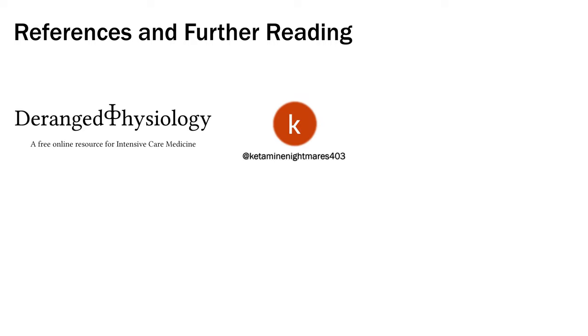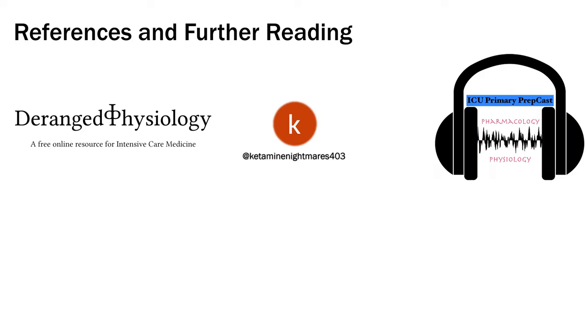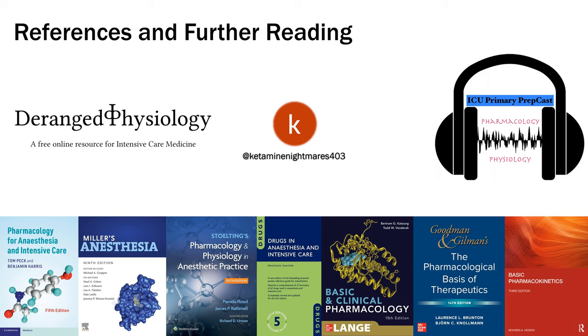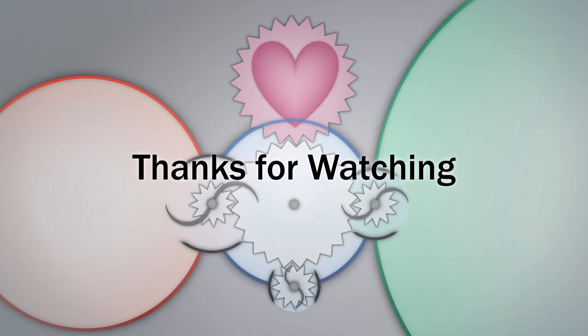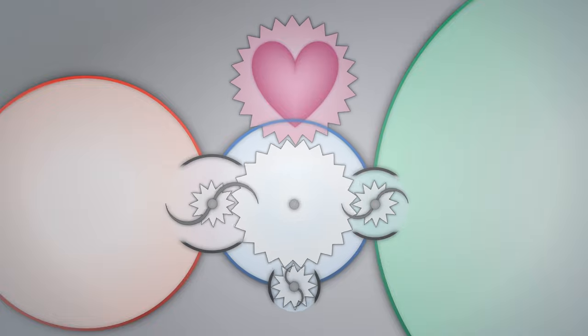That's it. If you want more information, check out some of my sources. Deranged Physiology is a standing recommendation. I'd also mention the anaesthetic YouTube channel Ketamine Nightmares, which has a whole series on pharmacokinetics. There's a podcast called ICU Primary Prepcast specifically for the Australian CICM primary exam — that's where I got the excellent point about maximum clearance rates of different organs. This was an anaesthetic-heavy video, so I used a lot of the same references as the neuromuscular junction video — Peck and Harris is probably the highest yield. If you want a book that properly dives into the mathematical stuff, check out Basic Pharmacokinetics. Thanks for watching — please subscribe and share. The next video will be a short one about pharmaceutics.